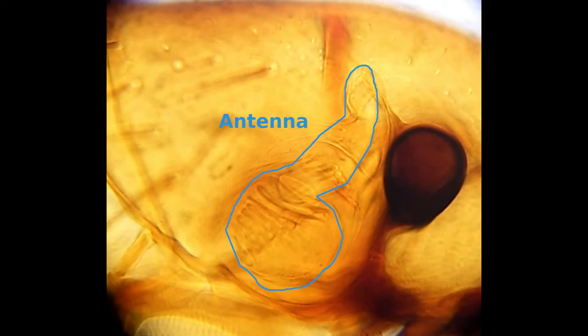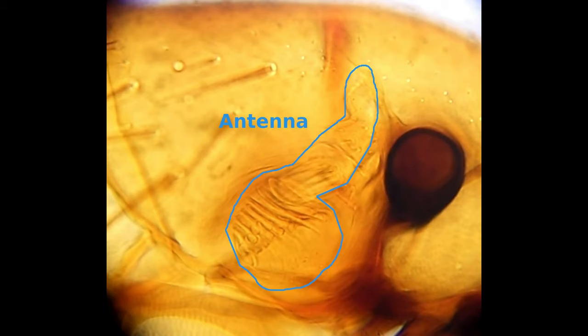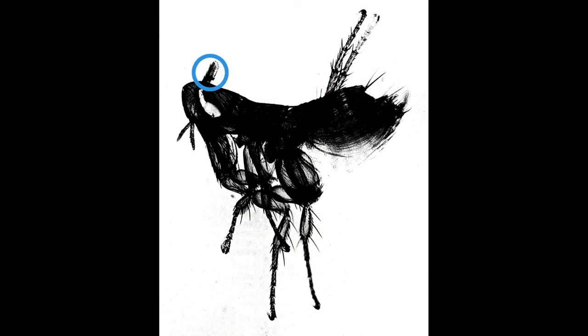The other pair are the flea's antennae which are tucked behind the eye in grooves to protect them from the host's hair. Unlike other insects, the antennae are not long and wavy but short and club-like. The antennae remain in that position except during the flea's jump during which they project out from the head.